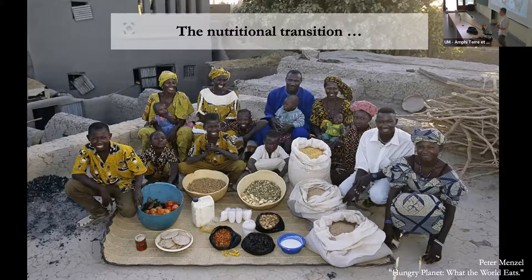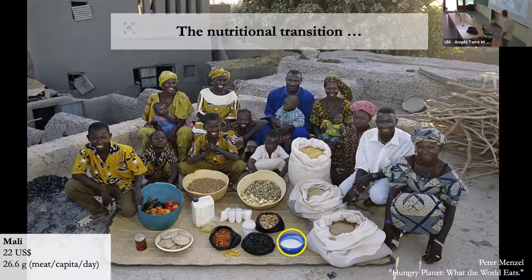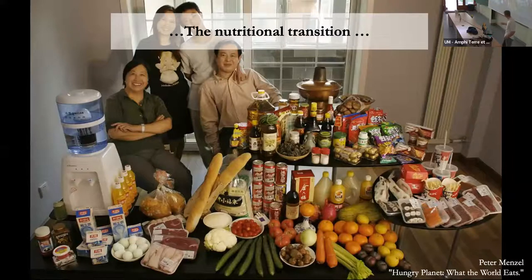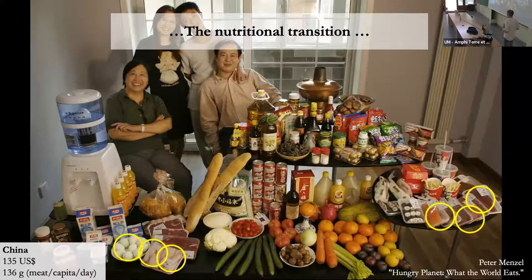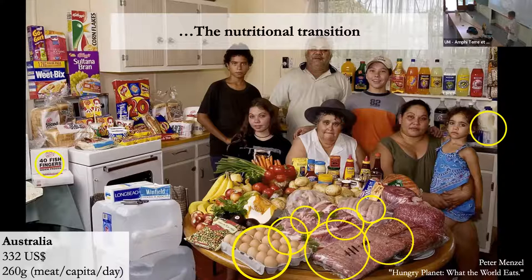I'd like to start by presenting work with photographer Peter Menzo, who went around the world with his camera to take a picture of what a week's worth of groceries looks like in different parts of the world. We start the journey in Mali — there isn't much animal protein on the menu of this family, and people have very little money to spend on weekly groceries. Moving to a middle-income country like China, people have more money for food and the amount of animal protein has already increased. Then, for a very high-income country like Australia, there's a lot of animal protein on the table.